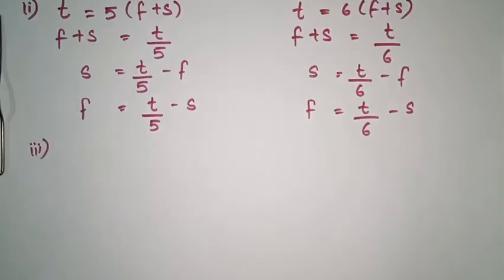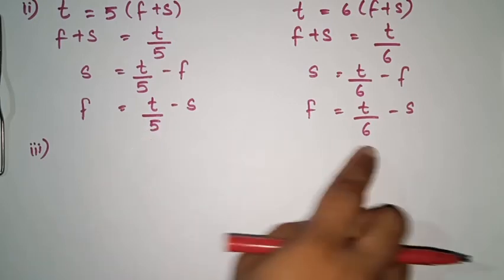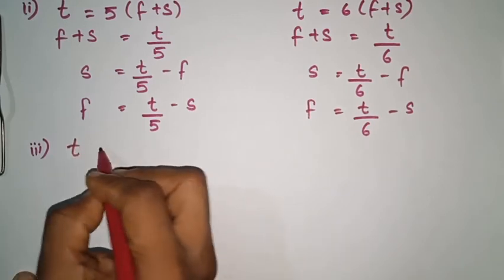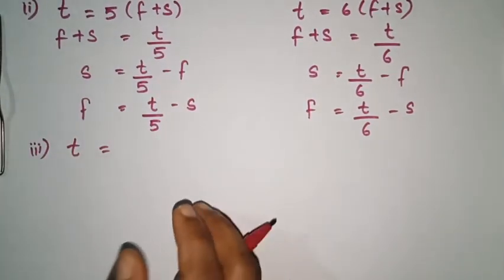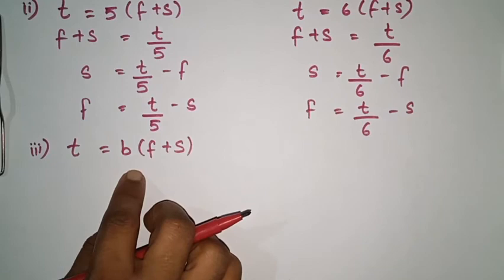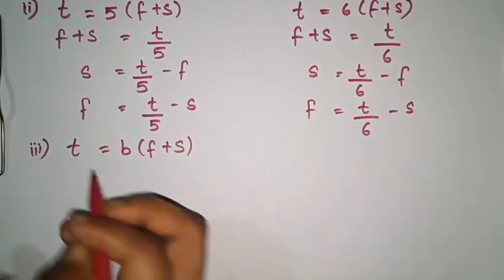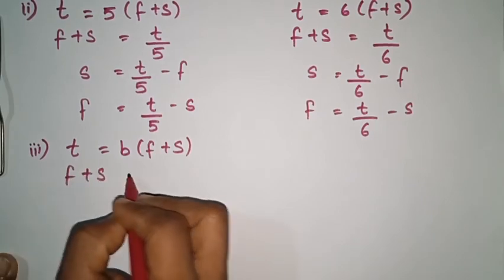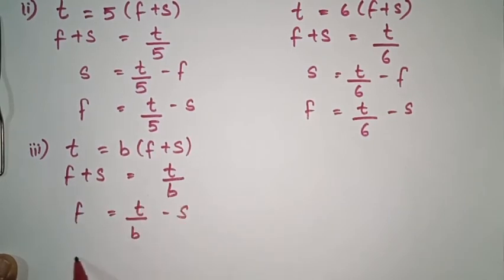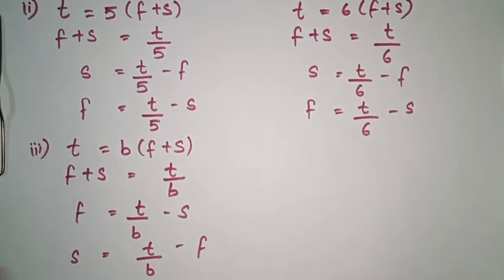If the number of biscuits given to each child is taken as b, in what ways can we write the relation between F, S, T, and b? We simply replace 5 or 6 with the letter b. So T equals b into (F plus S). Rearranging: F equals T by b minus S, and S equals T by b minus F.